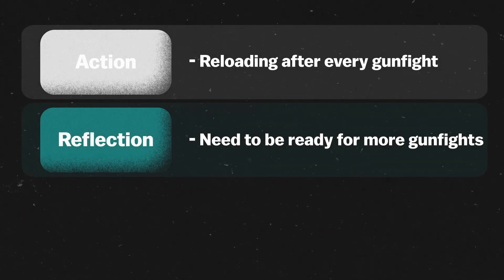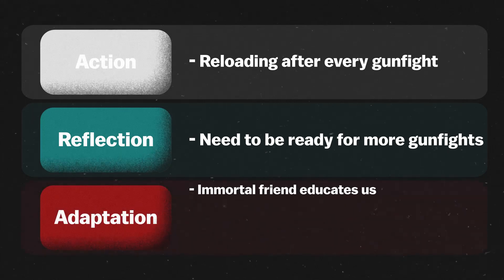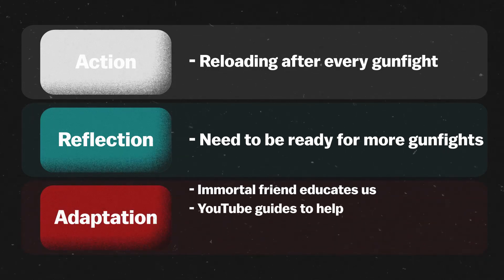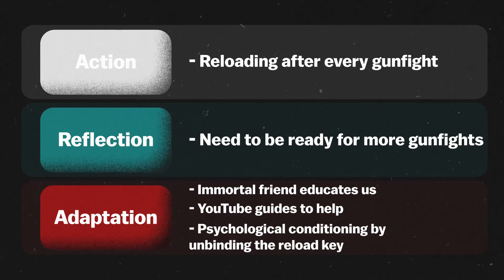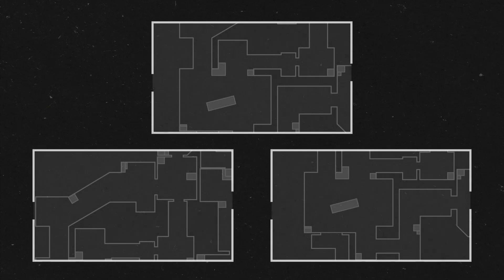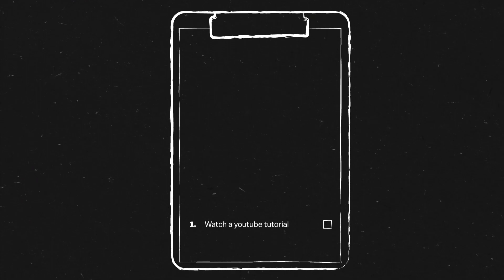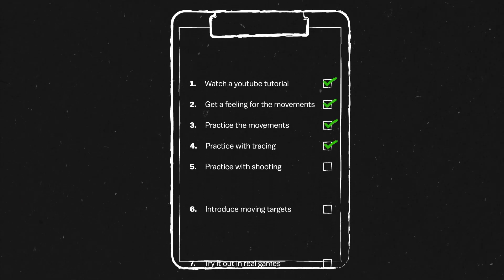Issue 3: reloading after every gunfight. Using the reflection phase, we identify that we have a habit of reloading too often, and should instead be ready for more enemies shortly after gunfights. We ask a higher-ranked friend what to do and use YouTube to search for ways to remedy this. We choose to psychologically condition ourselves not to reload so often by unbinding the reload key on our keyboard. Over time, the negative feedback of pressing the reload key will cause this behaviour to go extinct. The reflective cycle enables us to analyse a scenario, pinpoint specific positives and negatives, and create an action plan on how to reinforce or fix these things. The reflective cycle is the handbook you flick through when you want a practical checklist on improvement for anything.